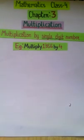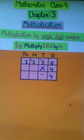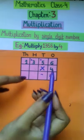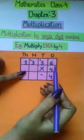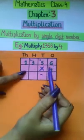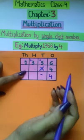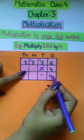Multiply 1356 by 4. So we first arrange the numbers according to their place values. Then we multiply the multiplier 4 with the 1's. 4 into 6 is 24. So we write 2 and 4.